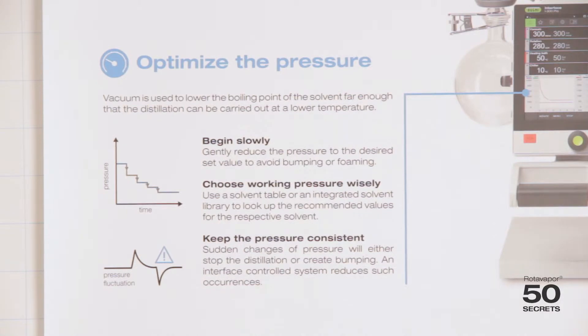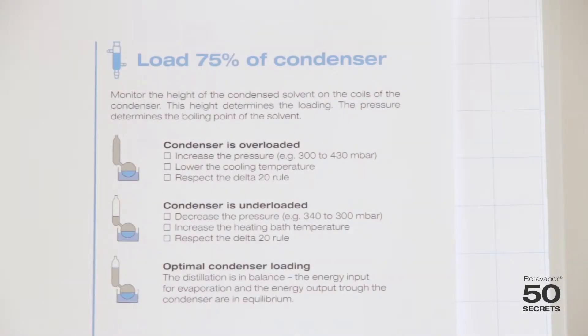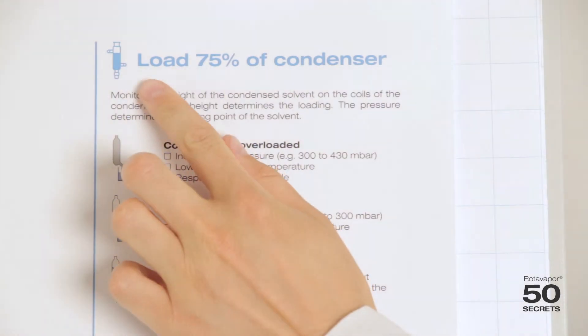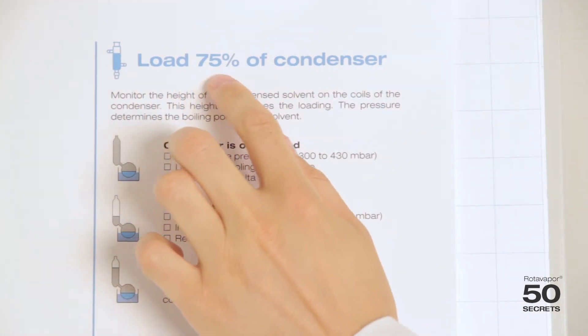Things like using the stopcock method result in big jumps of the vacuum. The third secret is about loading the condenser correctly. The correct loading would be about 75% of the condenser.